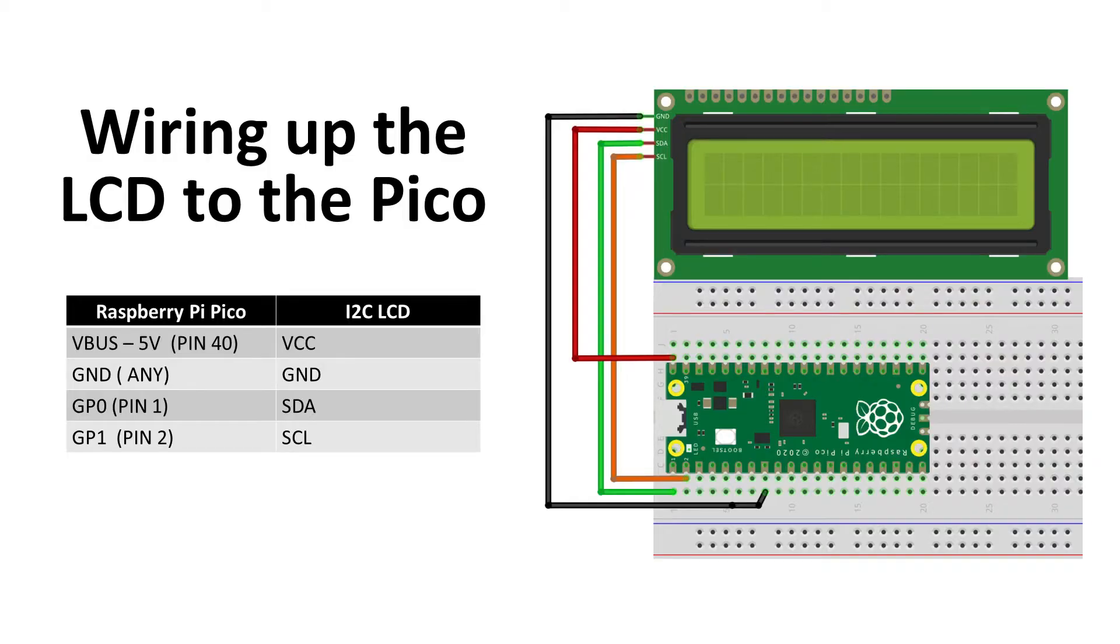Here we have the schematic diagram and it is straightforward to connect the VBUS pin 40 to the VCC of the LCD. Any of the multiple grounds on the Pico to the ground of the LCD and for the SDA we will connect to pin 1 and SCL to pin 2.